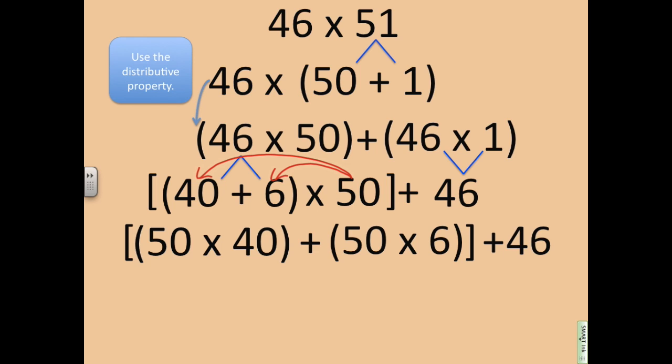Now that I have it like this, I can solve it mentally. I know I can solve it mentally because we know how to multiply numbers times digits that have zeros at the end of them. So I can solve 50 times 40 mentally. 5 times 4 is 20, and then I have to account for the two place values, so it is going to be 2,000. I can also solve 50 times 6 mentally and get 300. And then I want to remember to add 46.